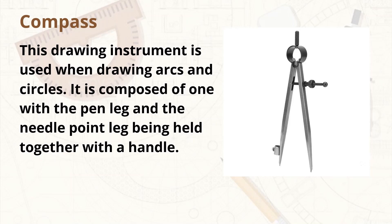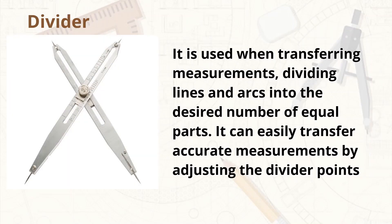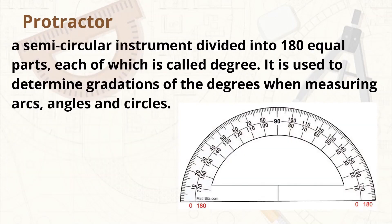Compass — this drawing instrument is used when drawing arcs and circles. It is used in a similar way to a divider, and is composed of one pen leg and a needle point leg held together with a handle. Divider — it is used when transferring measurements and dividing lines and arcs into the desired number of equal parts. It can easily transfer accurate measurements by adjusting the divider points. And protractor — a semicircular instrument divided into 180 equal parts, each called a degree. It is used to determine gradations of degrees when measuring arcs, angles, and circles.